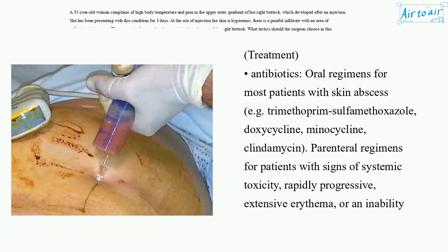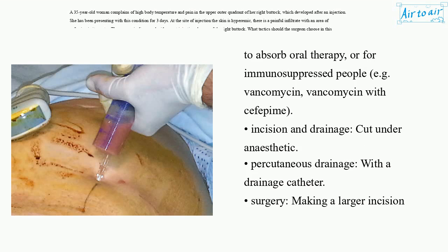Treatment — antibiotics. Oral regimens for most patients with skin abscess, e.g. trimethoprim-sulfamethoxazole, doxycycline, minocycline, clindamycin. Parenteral regimens for patients with signs of systemic toxicity, rapidly progressive extensive erythema, or an inability to absorb oral therapy, or for immunosuppressed people, e.g. vancomycin, or vancomycin with cefepime.